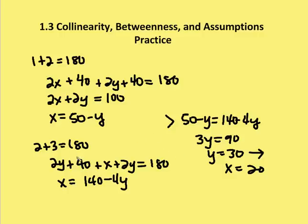Since x equals x, I can set these two expressions equal to each other: 50 minus y is equal to 140 minus 4y. Solving for y, I get 3y is equal to 90, so y is equal to 30 degrees.